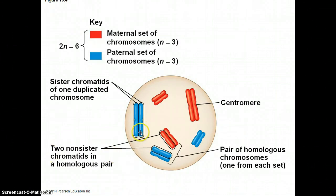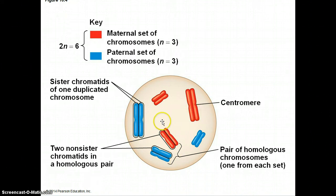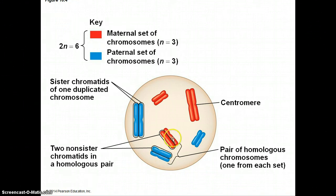Here I have sister chromatids and one duplicated chromosome — this is from dad, this one's from mom. Right here, this would be a homologous set of chromosomes: same size, same shape. Same size, same shape, same genes. Maybe this one has the gene for dimples on it — maybe dad has the allele for dimples, maybe mom doesn't have the allele for dimples, but this gene is still present. Same size, same shape, same genes — those are homologous chromosomes.